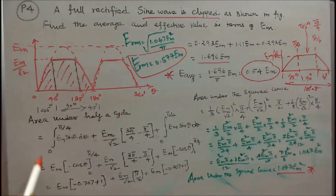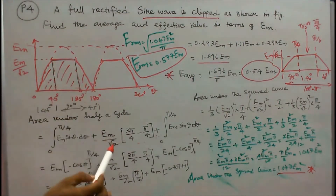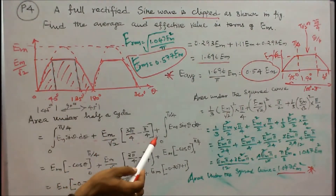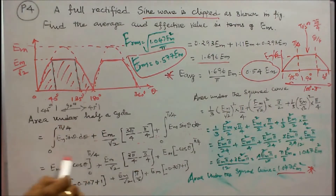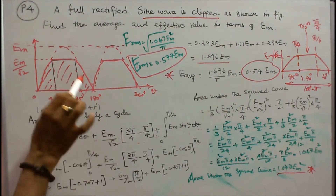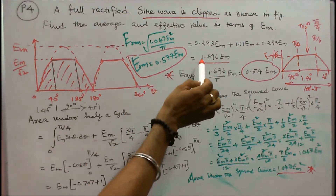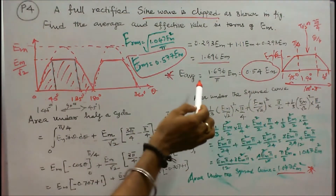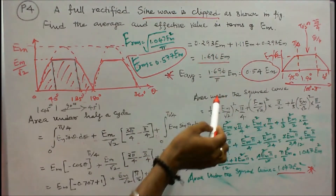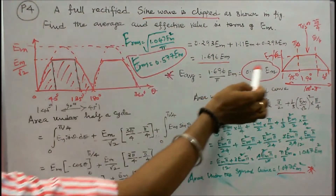The area under half a cycle equals the integral from 0 to pi/4 of EM sine theta d-theta, plus the flat rectangular area EM/root 2 times (3pi/4 minus pi/4), plus the integral from 3pi/4 to pi of EM sine theta d-theta. The total area under half a cycle is 1.696 EM. The period is pi, so E average equals 1.696 divided by pi times EM, which equals 0.54 EM.